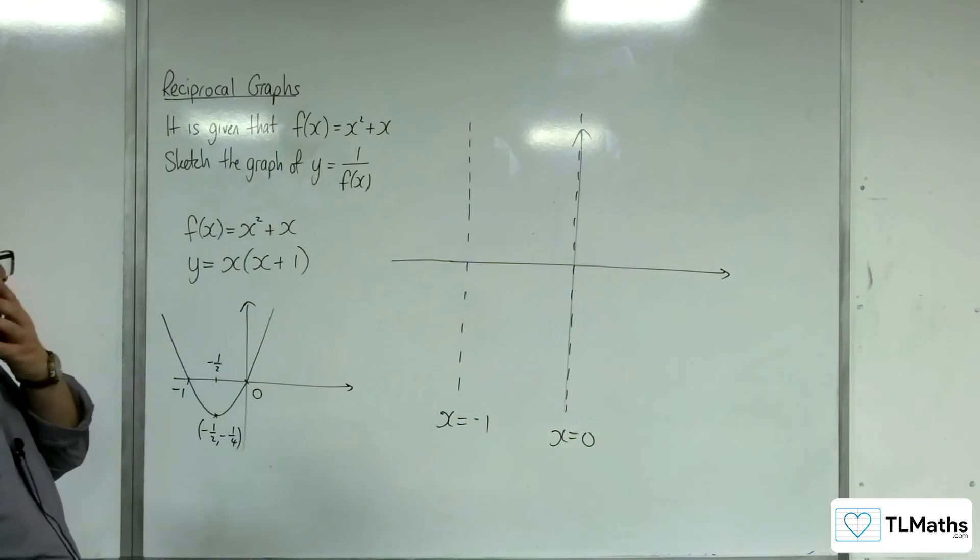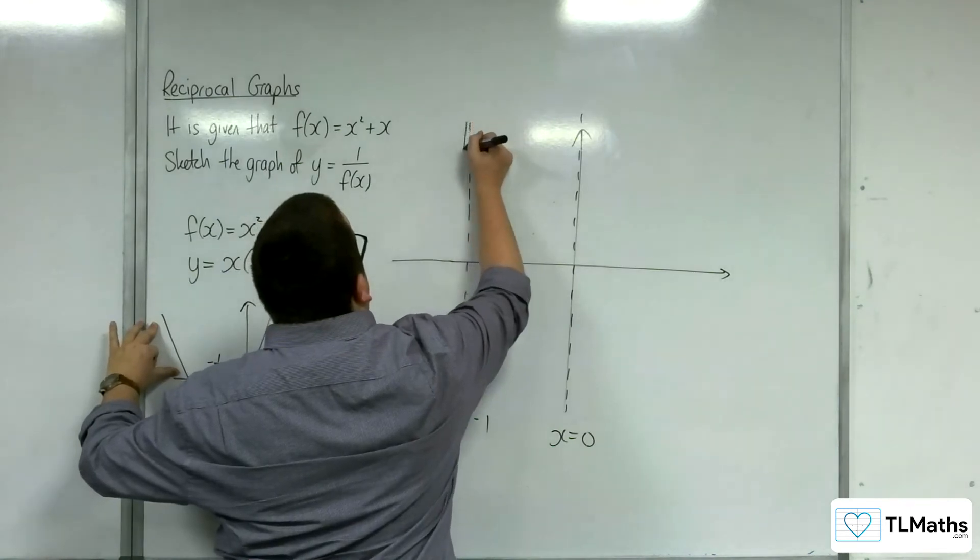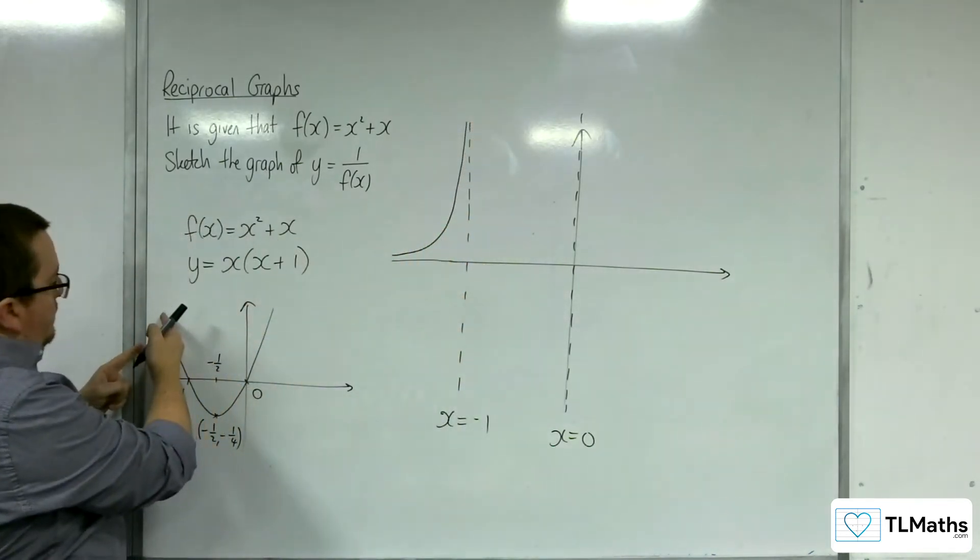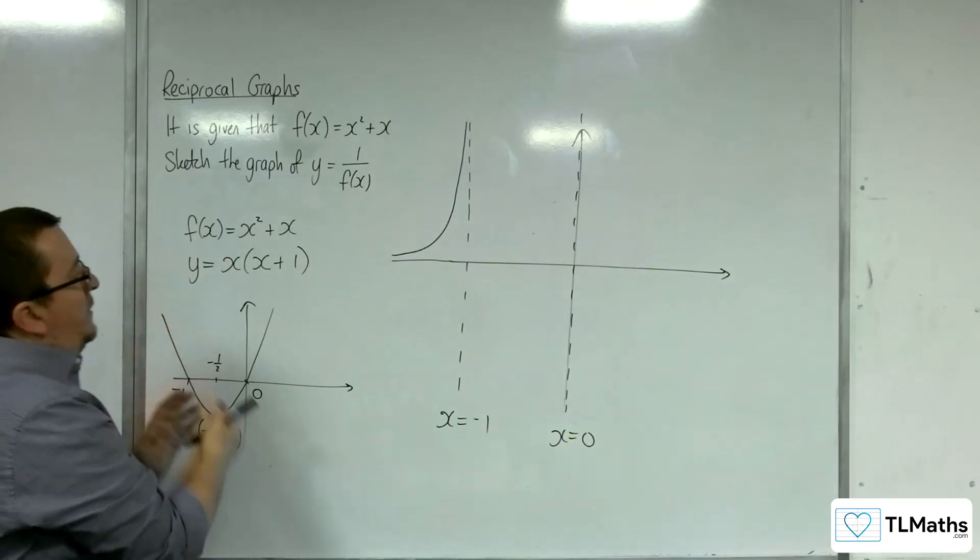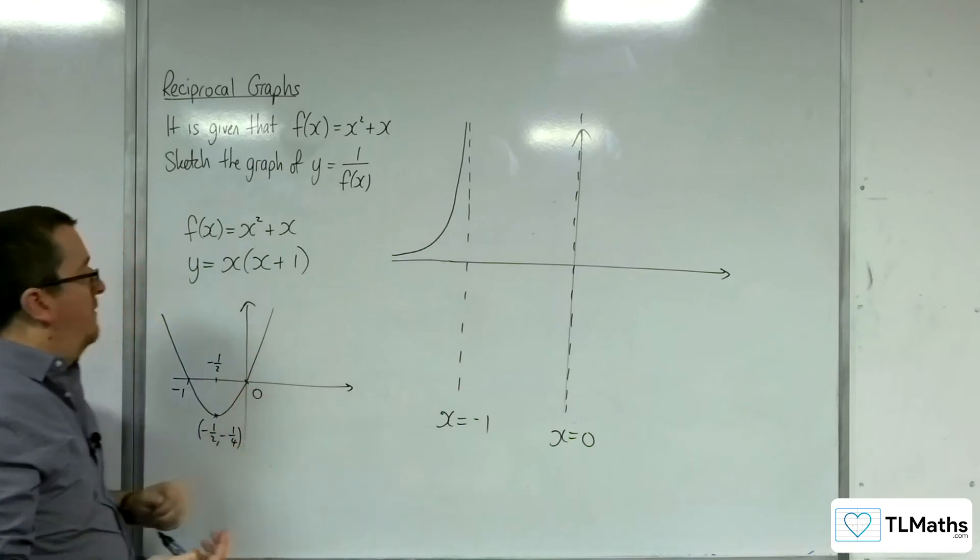To the left of -1, we're going to have this portion of the graph, turning towards the asymptote. This graph is positive here because it's above the x-axis, so y = 1/f(x) will be positive. That's why it's above there as well.